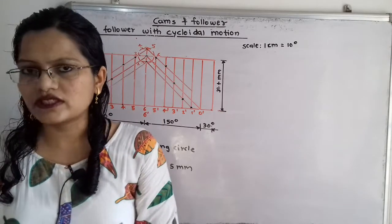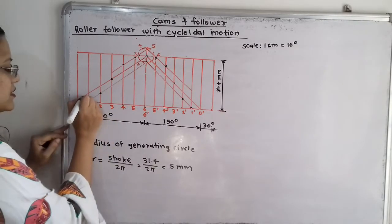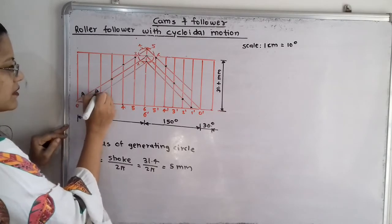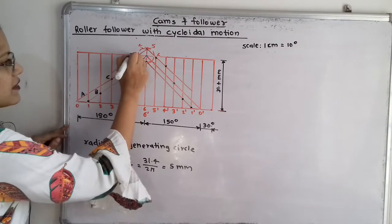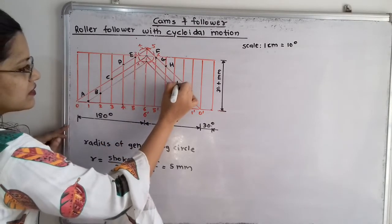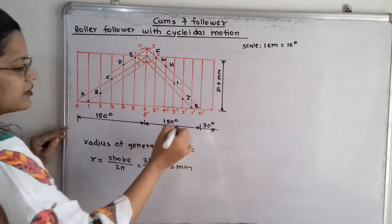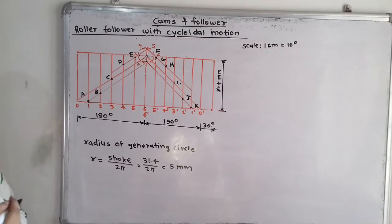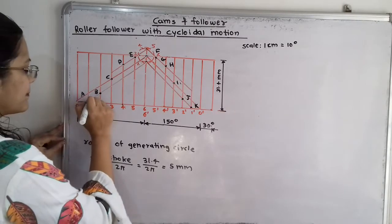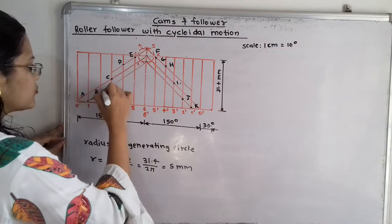We label all the trace points with letters in sequence: A, B, C, D, E, F, G, H, I, J, and K. These are the trace points on the displacement diagram. We then join all these points with a smooth curve to complete the cycloidal displacement diagram.